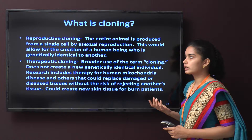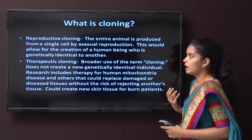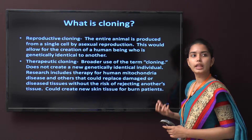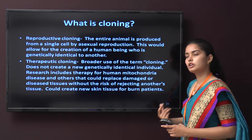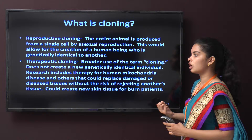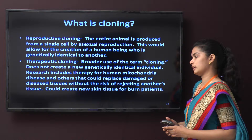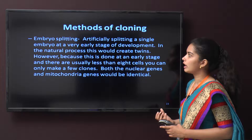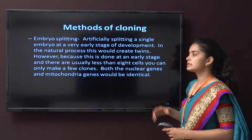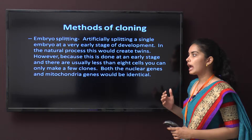What is cloning? Reproductive cloning produces an entire animal from a single cell by asexual reproduction, which could allow creation of a human genetically identical to another. Therapeutic cloning, however, does not create a new genetically identical individual. Research includes therapy for human mitochondrial disease and others — it could replace damaged or diseased tissues without rejection risk, and could create new skin tissue for burn patients. One cloning method is embryo splitting: artificially splitting a single embryo at an early stage of development, which naturally would create twins. Because it is done at a very early stage with fewer than eight cells, only a few clones can be made, and both nuclear and mitochondrial genes would be identical.